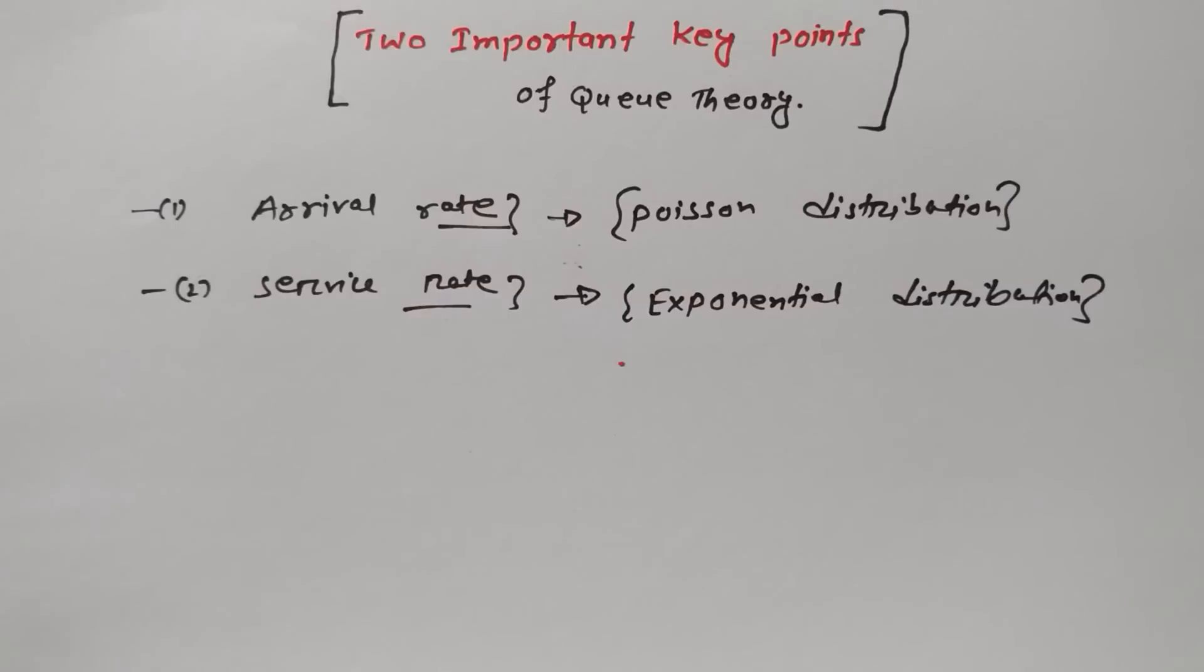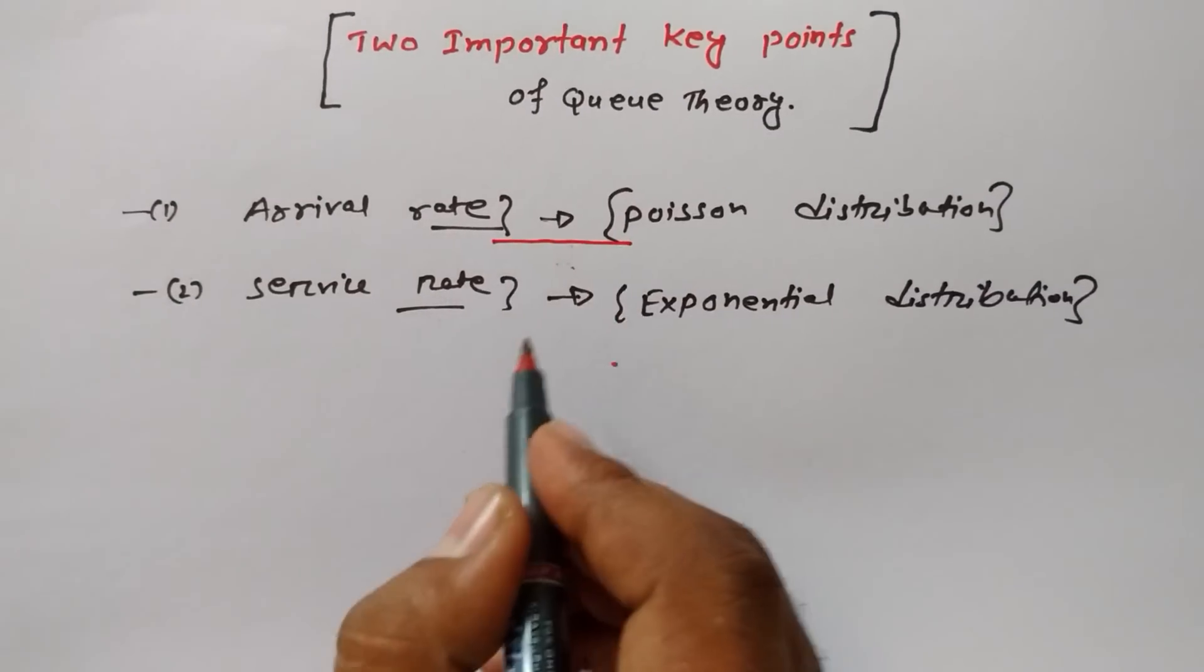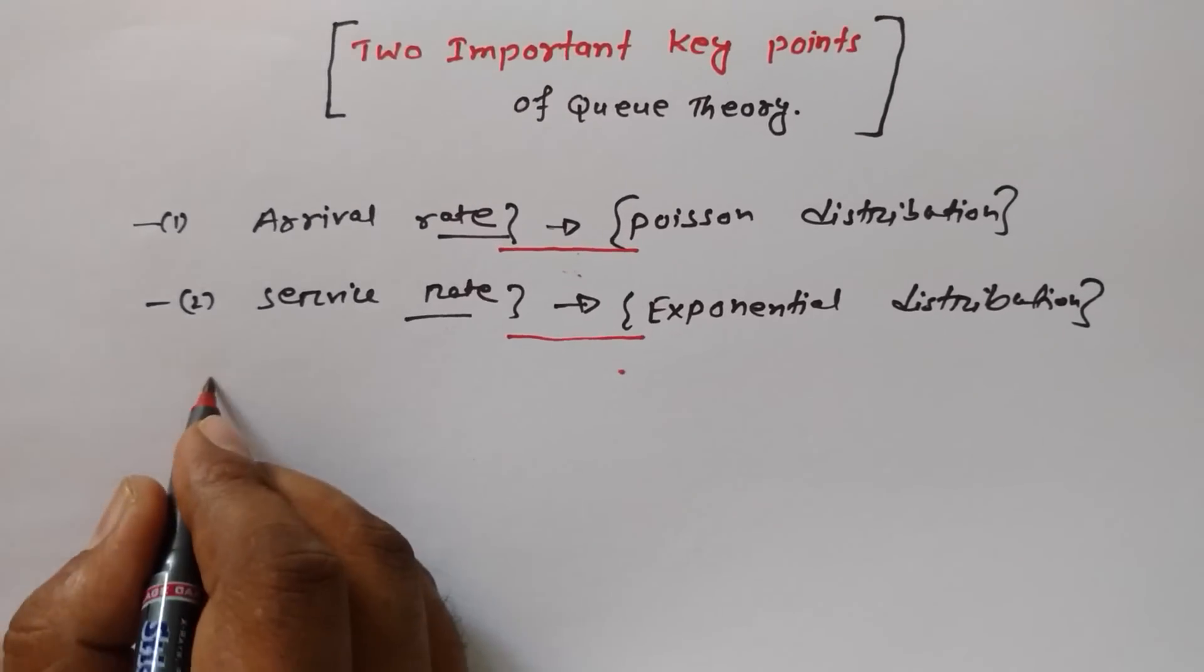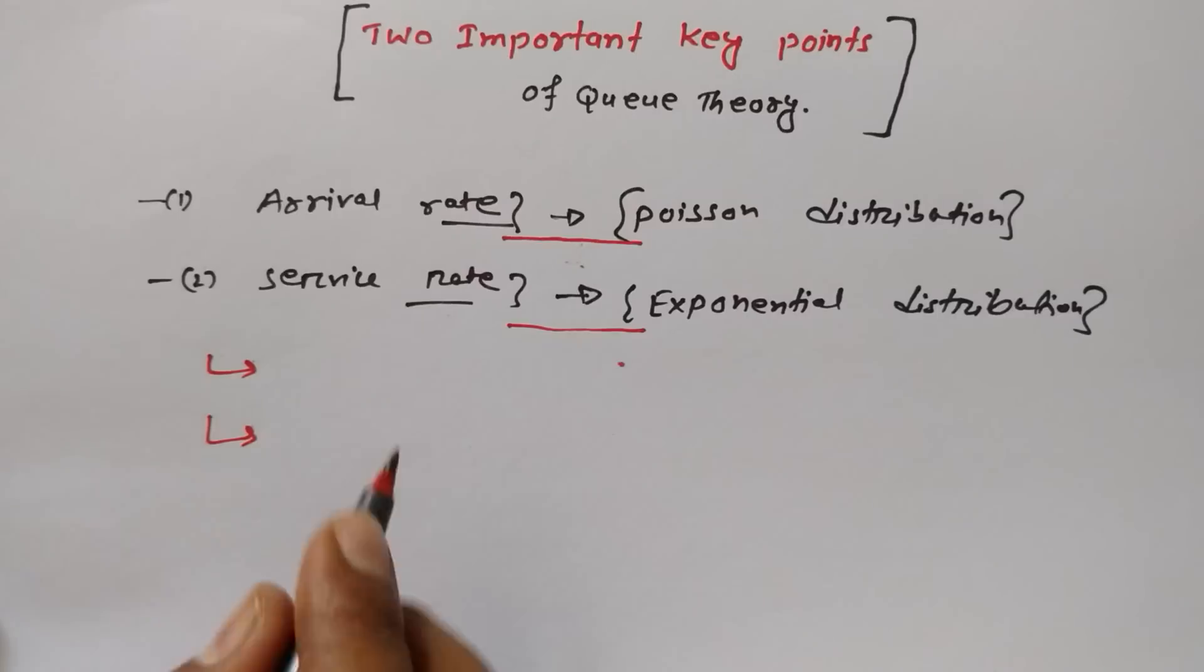Why are these two points important? Most of the time, if we get a theoretical MCQ question, they're going to ask you what we follow in case of arrival rate in Queue theory. Then you can easily answer if you know the basic concept. Now, let me share two more things with you.